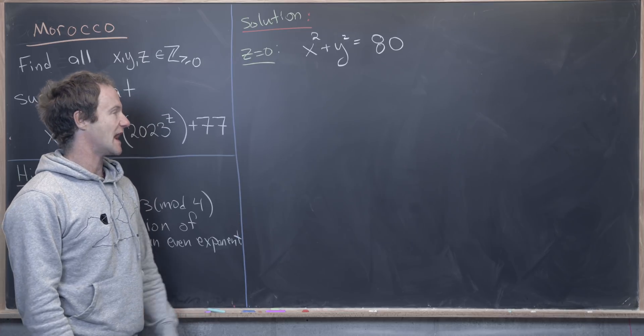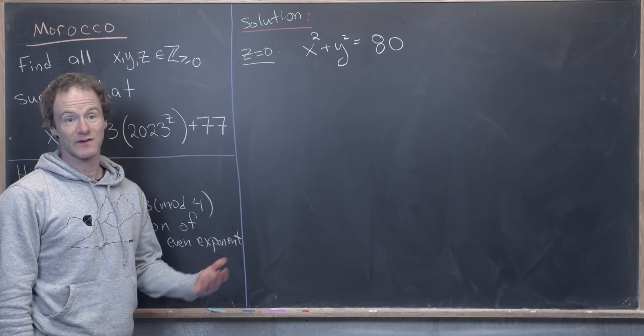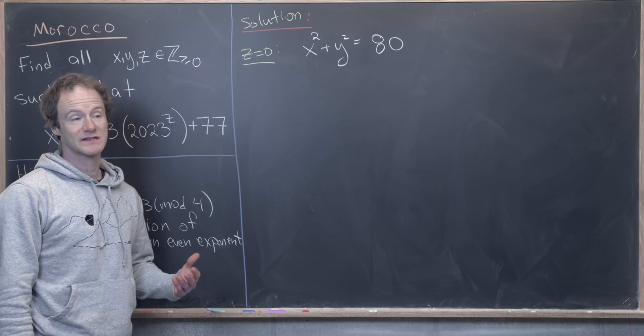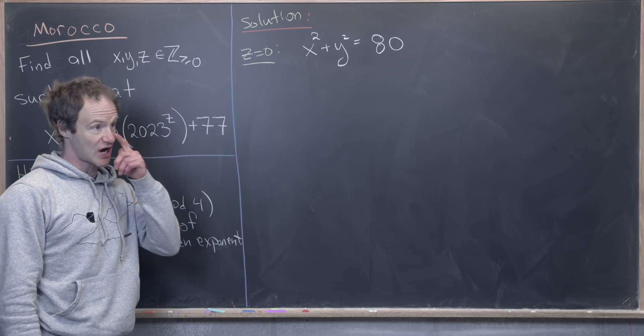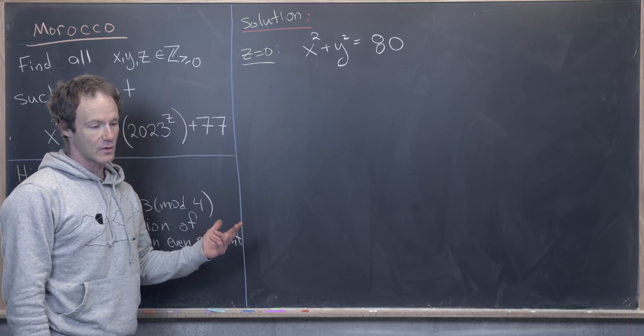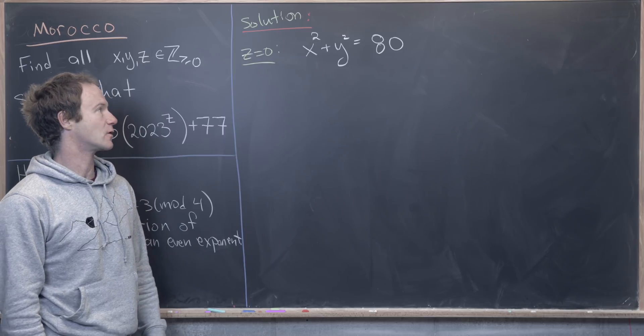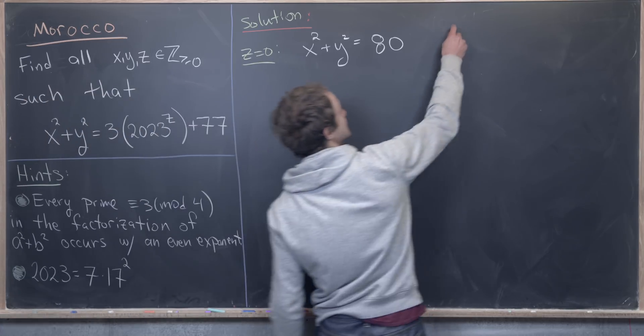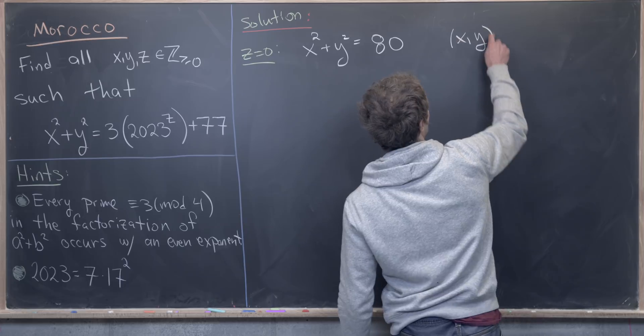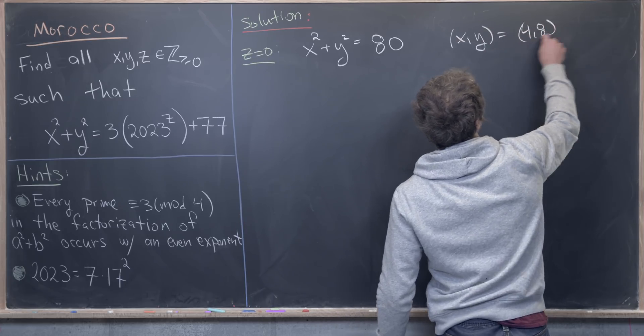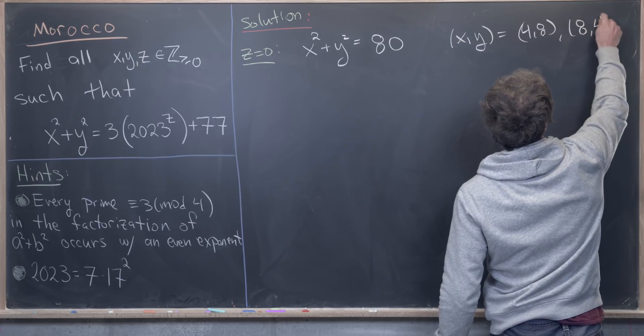You can see that x and y definitely couldn't be 9 because that would give us 81. They could possibly be 8. And if you check 8, then the other one works to be 4 because 16 plus 64 is 80. And so that gives us an immediate solution of x, y equals 4, 8 or 8, 4.